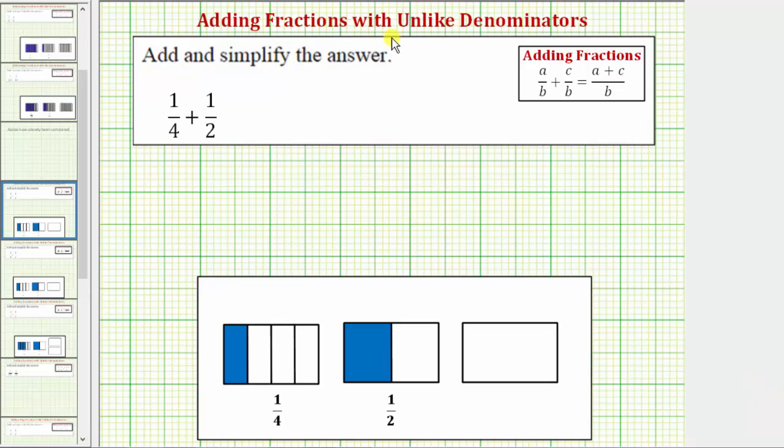Welcome to an example on how to add two fractions with unlike denominators. The most important thing to remember when adding or subtracting fractions is that we must have a common denominator. The reason we need a common denominator is so that we're adding or subtracting pieces or parts of the same size.